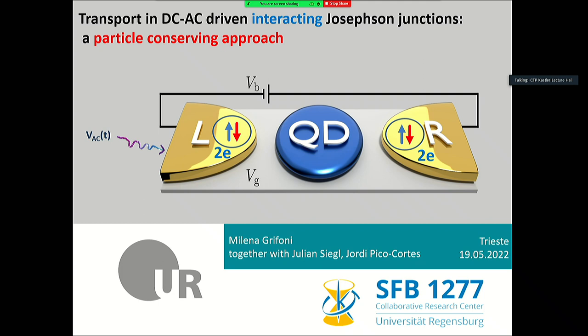The new thing compared to all the talks we have heard so far is that I will try to convince you that you can use a particle-conserving approach to superconductivity to describe a Josephson junction. This is the setup we are going to study: a superconductor with Cooper pairs, a quantum dot, and a Cooper pair reservoir. Importantly, I do not put a phase φ_L or φ_R here.